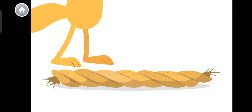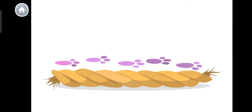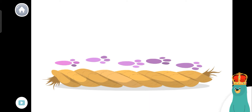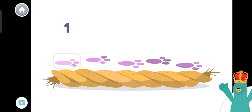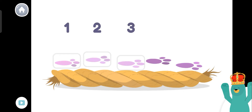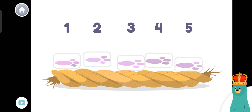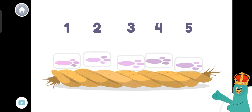One, two, three, four, five! The rope is five paw prints long! Let's count the paw prints. Tap them. One, two, three, four, five! The rope is as long as five paw prints.